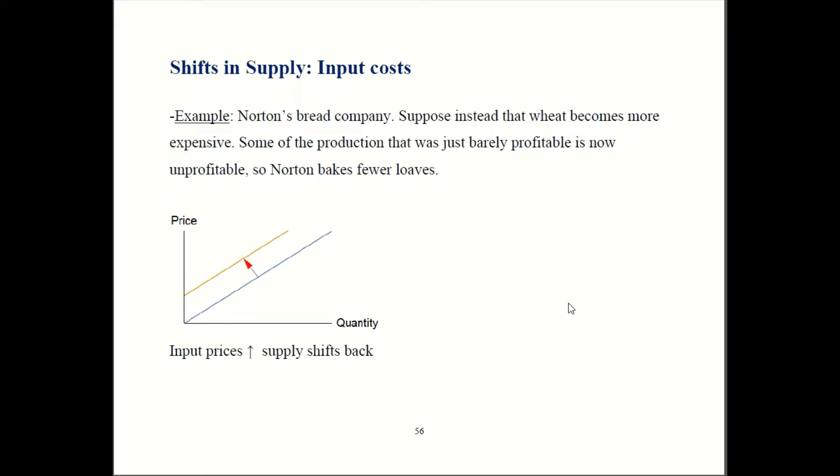If on the other hand, wheat became more expensive, you would see the opposite. So now some loaves of bread that had been just barely profitable, Norton was just barely breaking even on them, become unprofitable.